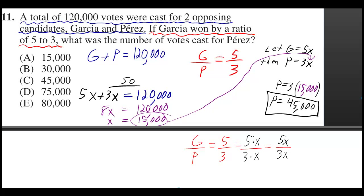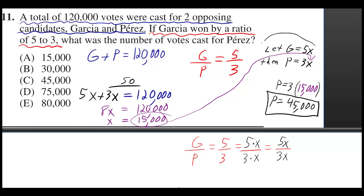Same for 5 times any number X and 3 times that same number X. In other words, 5X and 3X. So if we let G be 5X, then P will have to be 3X.